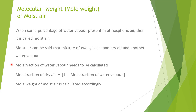The mole fraction of water vapor needs to be calculated. Once the mole fraction of water vapor is known, the mole fraction of dry air is equal to 1 minus the mole fraction of water vapor. Once both mole fractions are known, the molecular weight of the moist air is calculated accordingly.